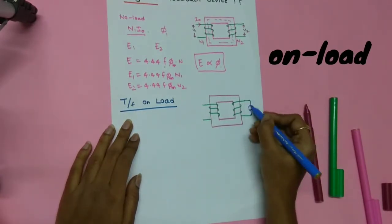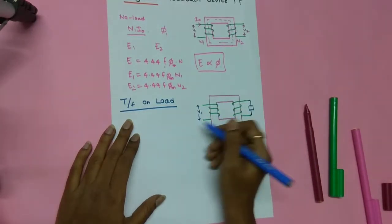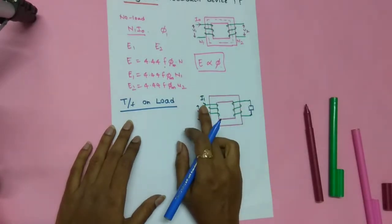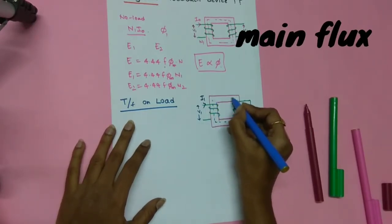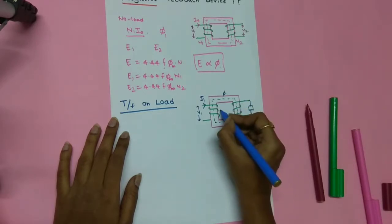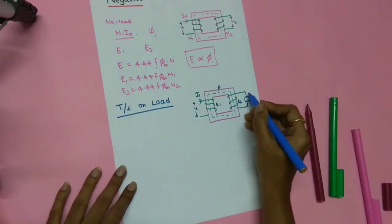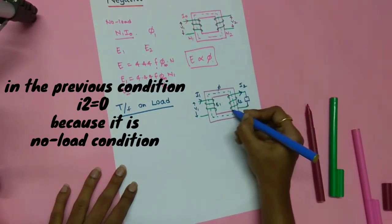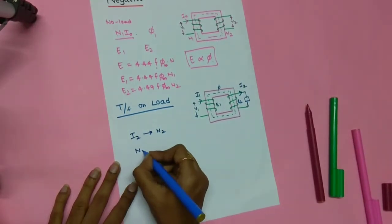Now consider the second case: the transformer on load, meaning a load is connected at the secondary winding. I am applying voltage V1 at the primary winding. Since the load is connected at the secondary, a current i1 flows in the primary, and a flux φ is produced in the core. This flux links with both windings, producing e1 and e2. Since the secondary circuit is now closed, i2 starts flowing in the secondary circuit through N2 turns.